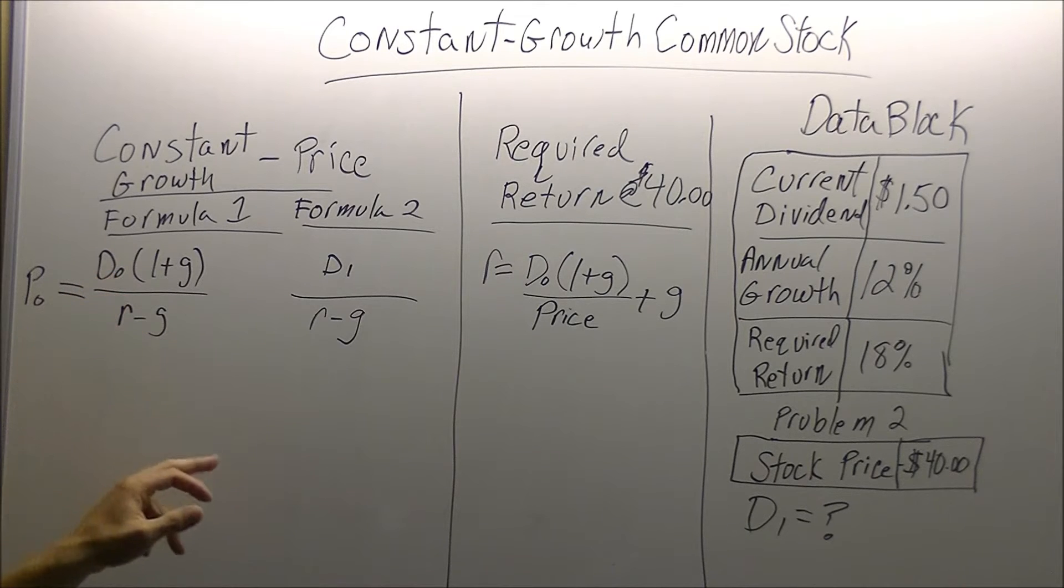So they have to give us the dividend, the growth, and the rate of return. With those three variables, we solve for the price.